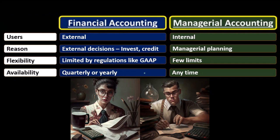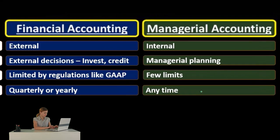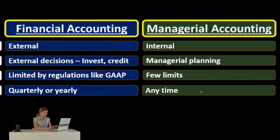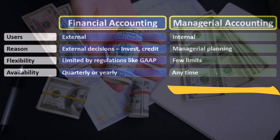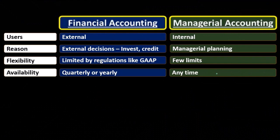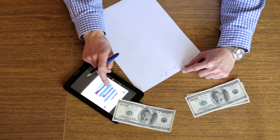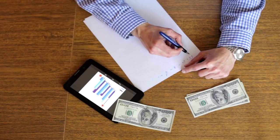For managerial accounting we don't have that same kind of regulation. The limits we face are typically a cost-benefit analysis: we could get more information, but is it worth it? There's always a balancing question — is it worth the time to gather more detailed information, or does the improved decision-making not justify the added cost? That's the typical restraint on managerial accounting, as opposed to regulatory restraints.